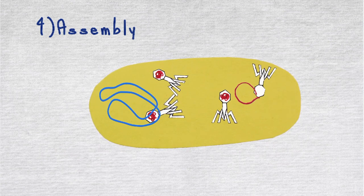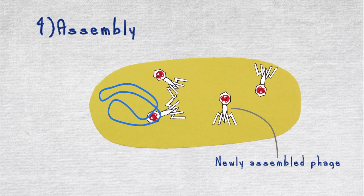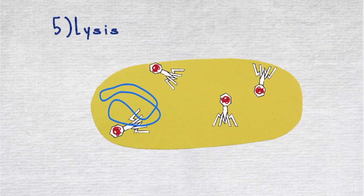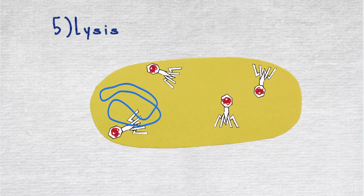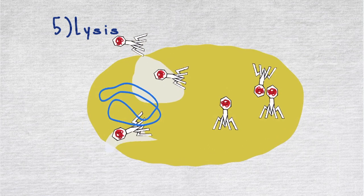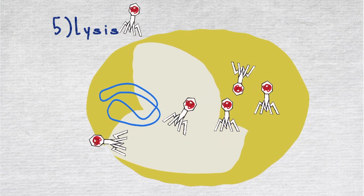Then the last and most tragic stage, at least for the bacterium, the lysis. This stage happens late in the lytic cycle, when the phage expresses genes for proteins that tear up the plasma membrane and cell wall. With holes on the membrane and wall, water flows in the cell.